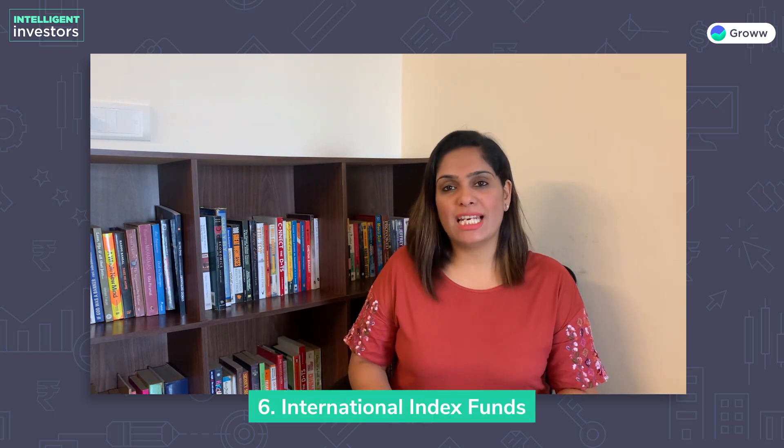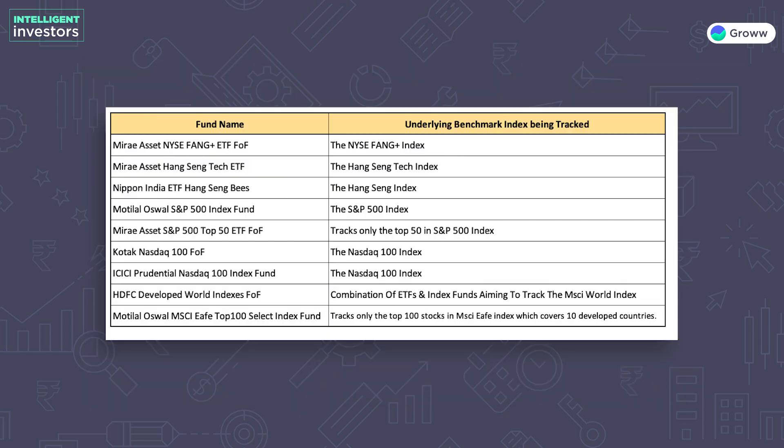The next category is international index funds. These funds replicate international indices in developed markets, emerging markets, or frontier markets. As an investor you can gain exposure to international stocks. For example, the NYSE FANG+ Index comprises Facebook, Apple, Amazon, Netflix, Google, and five growth stocks — Twitter, Tesla, Baidu, Alibaba, and Nvidia. Other options include S&P 500, Nasdaq, or international indices like the Hang Seng. On your screen you can see some examples of funds investing in international indices.